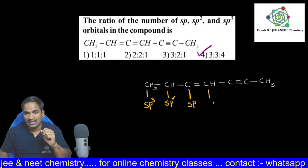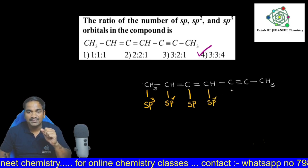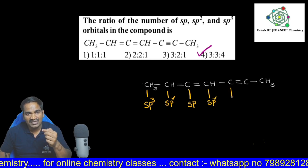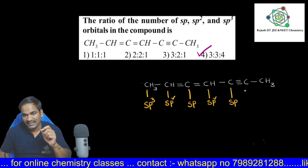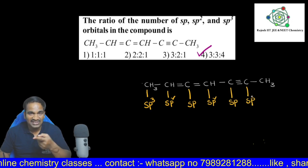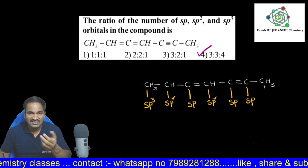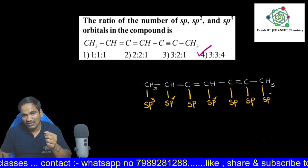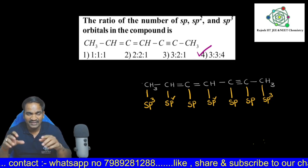The next carbon is attached to one double bond, so it is involving in sp2 hybridization. As we discussed, if the carbon is attached with one triple bond, it is involving in sp hybridization — you see this here, also sp, because it is also attached with one triple bond. The last one has all single bonds, no double or triple bond, so it is involving in sp3 hybridization.